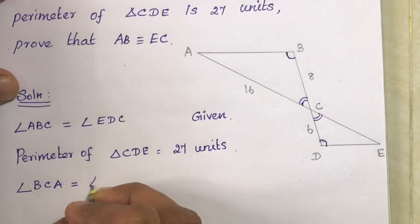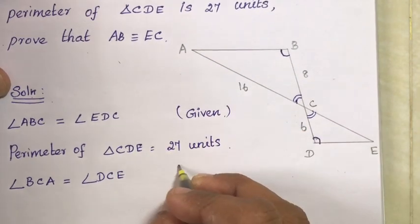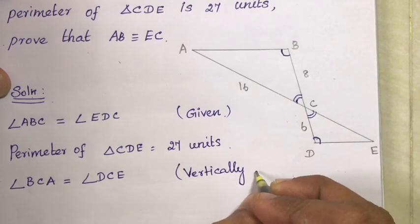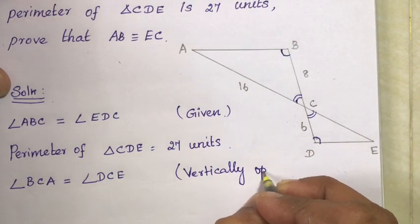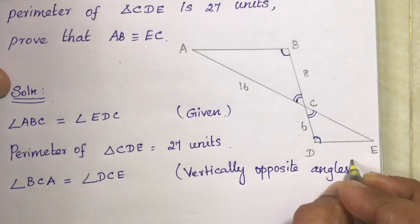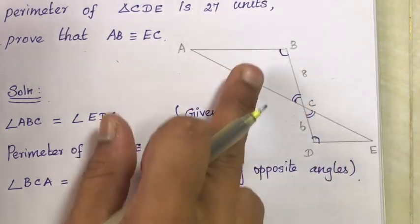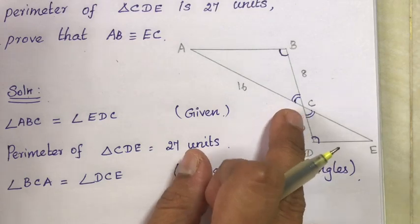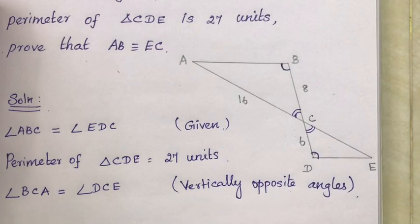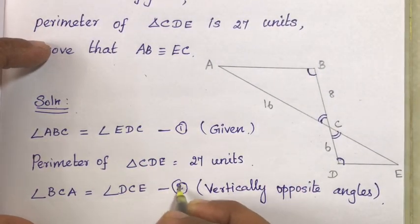So angle BCA is equal to angle DCE. The reason is vertically opposite angles are equal.